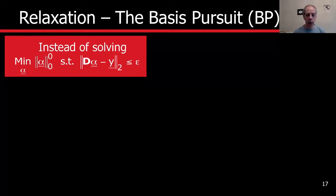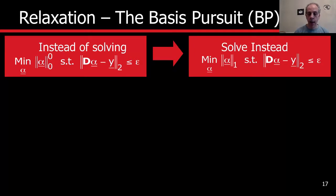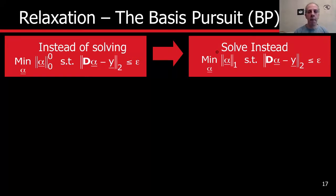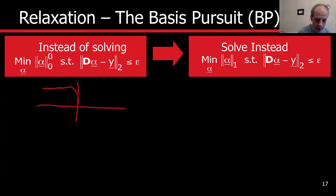Relaxation methods are also called basis pursuit methods. This is our problem — what we want to solve. Relaxation methods change it by replacing the L0 norm (pseudo-norm) with the L1 norm. We're no longer just counting the number of non-zero coefficients; we're counting them weighted by their magnitude. Remember, in the L0 norm there was a flat penalty — no penalty when zero, same penalty when non-zero.